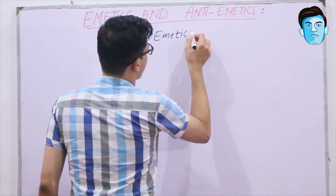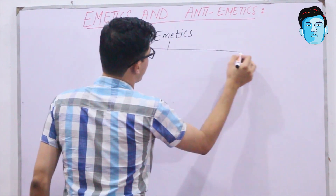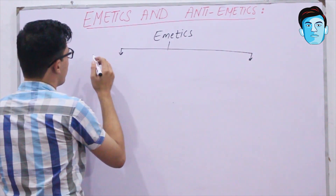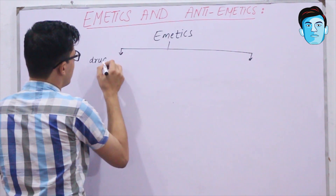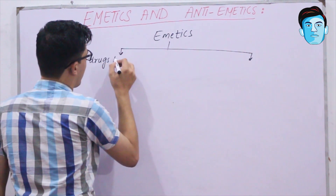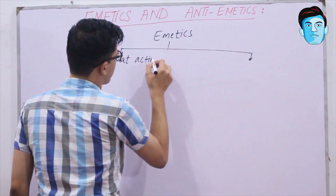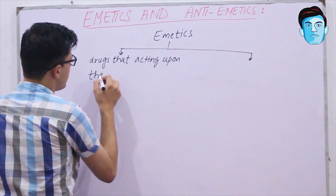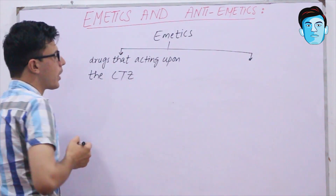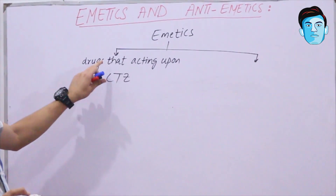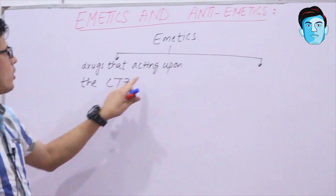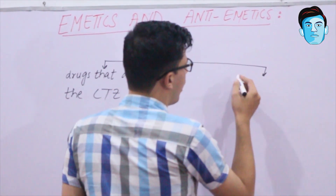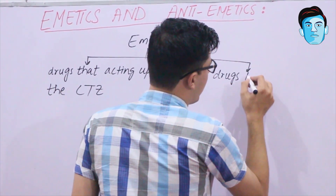There are two varieties of drugs found under the category of emetics. One variety consists of drugs acting upon the chemoreceptor trigger zone area, and another variety consists of drugs that irritate the gastric mucosa and the chemoreceptor trigger zone area.